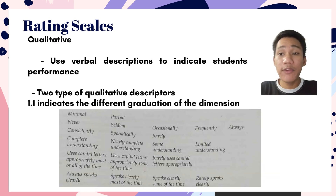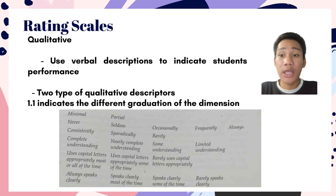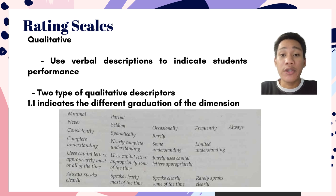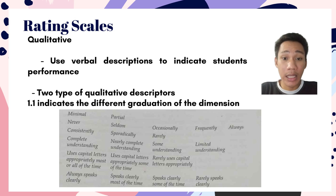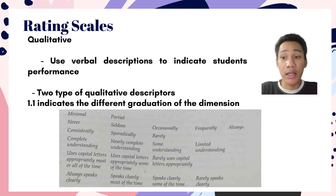Next is qualitative. A qualitative rating scale uses verbal descriptions to indicate student performance. It has two types of qualitative descriptors. The first type indicates the different graduations of the dimension — it is like a one-sided rating scale that provides only minimal descriptors such as never, partial, seldom, or occasionally.